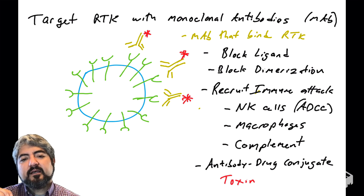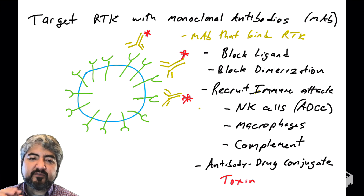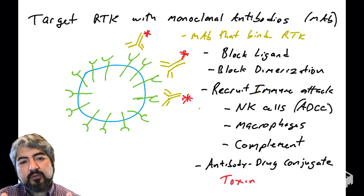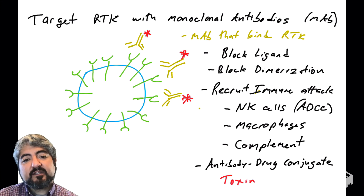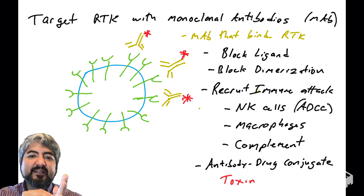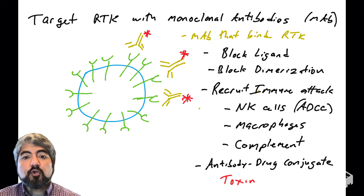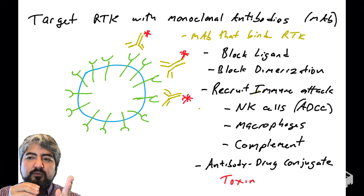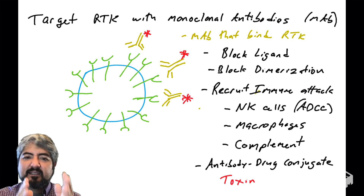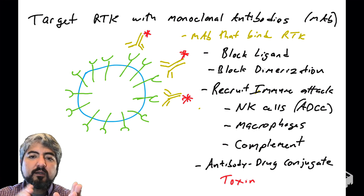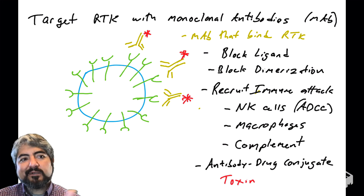Another approach currently being tested is to conjugate drugs — specifically toxins — to the antibodies. If you want to deliver a toxic payload, either a chemically toxic payload or a radioactive payload, to the cell to help destroy it, you use antibodies to target the cell and bring the toxin directly to it. These are three ways that antibodies can work to help treat human cancers: binding strongly and specifically to a receptor, and either preventing receptor activation or bringing the immune system or toxins to the cell to destroy it.